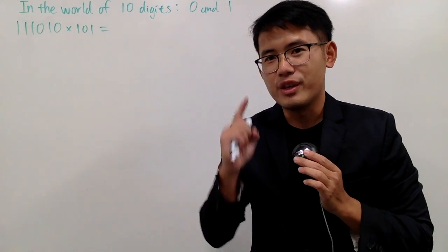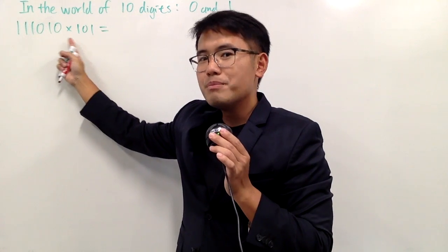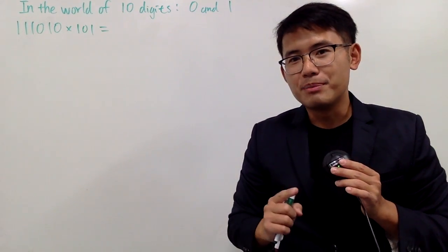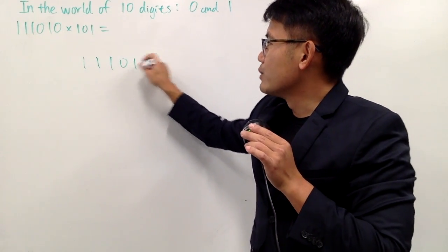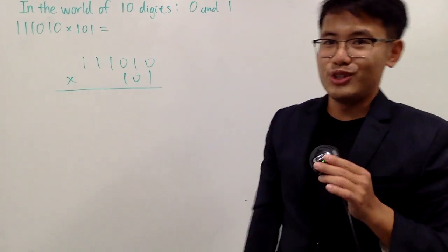Okay, in the world of only two digits, we can still multiply. Let's go ahead and multiply 111010 by 101. And after we finish this, we will check our answer by division. So let's go ahead and do this. 111010 multiply by 101. Of course, line up to the right, just as usual.